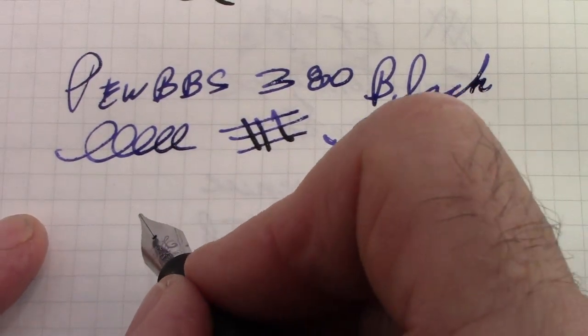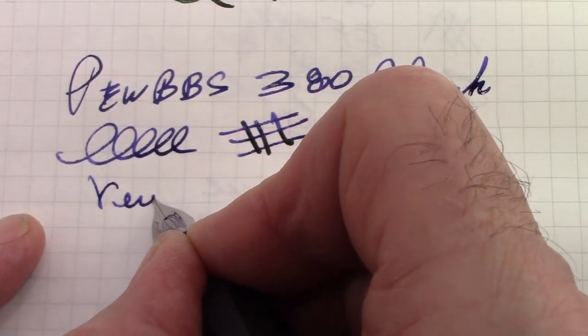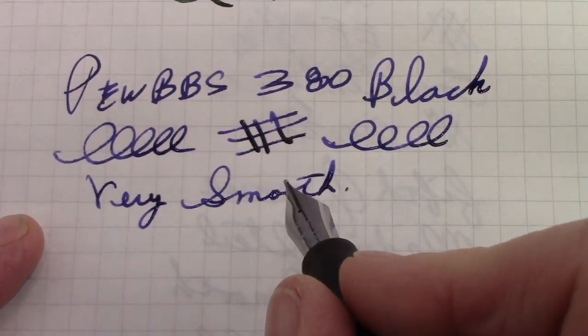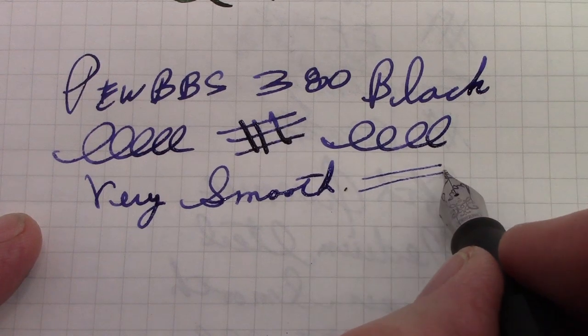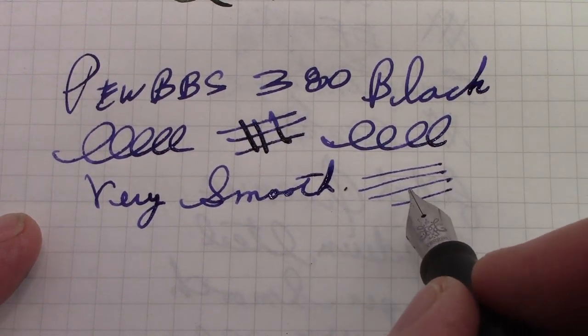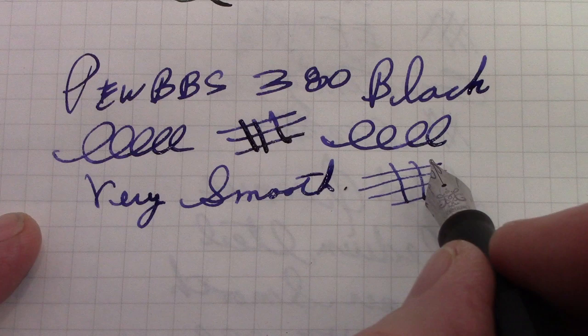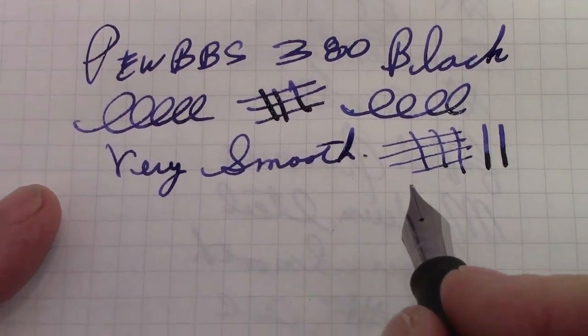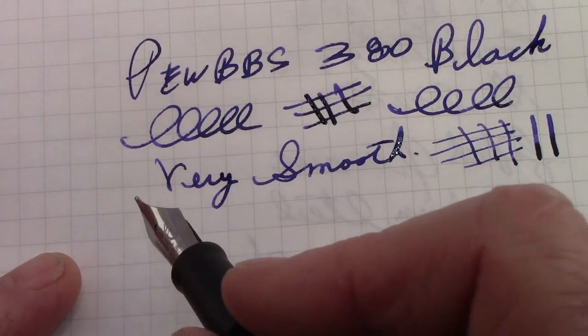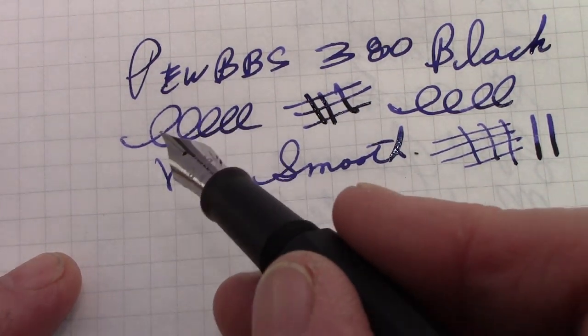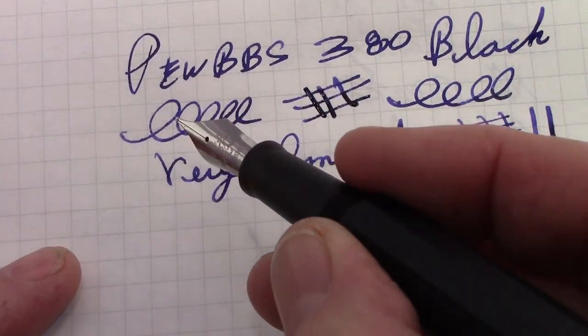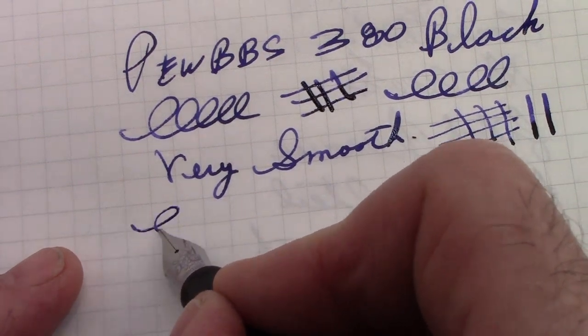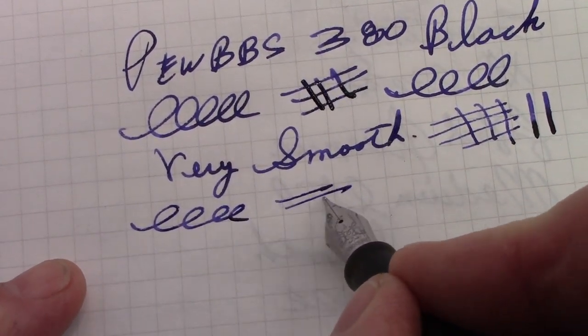I mean, this nib is very smooth, which all the medium nibs have been very smooth. But what I've noticed is, with light pressure, you just get a very, very fine line. You put down more pressure, you can get more ink flow. It's writing better now than when I first inked it up. When I first inked it up, it was a little dry, a little skippy, but I think it took a while for the ink to equilibrate in the nib and feed. And now it's writing as well as any of the medium nibs that I have.